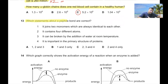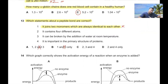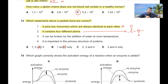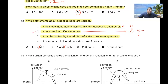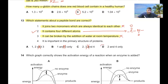Question 13: Which statements about a peptide bond are correct? Statement 1 says it joins monomers that are always identical — this is wrong, amino acids are never identical. Statement 2: it contains four different atoms — C, O, N, H — correct. Statement 3: it can be broken by addition of water at room temperature — wrong, peptide bonds are stable and don't break down so easily. So option D is correct.